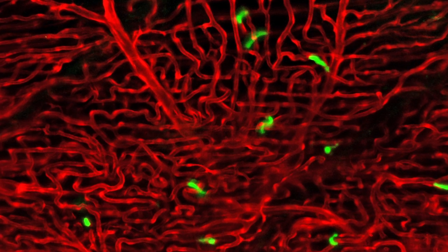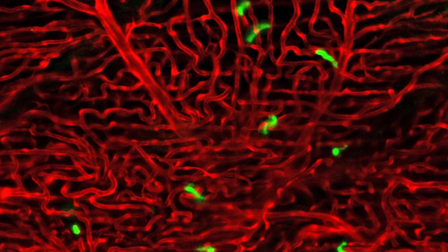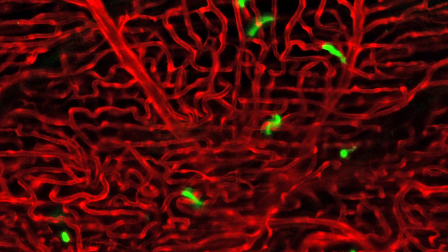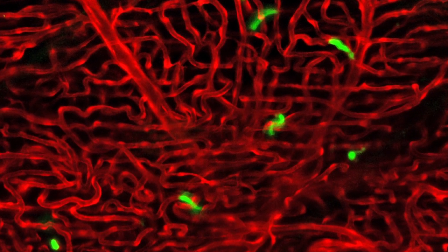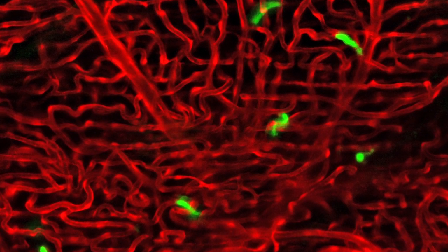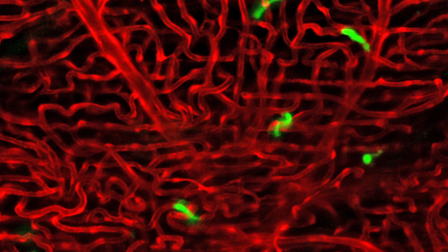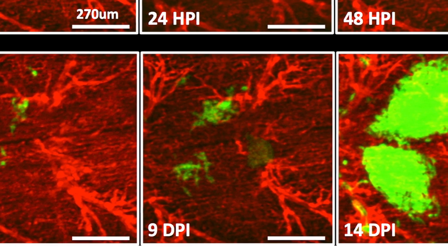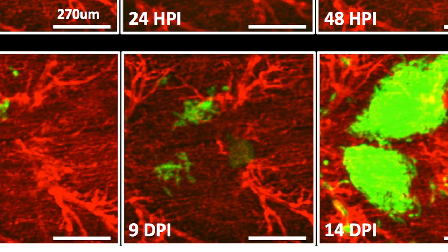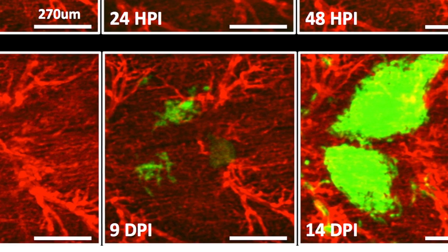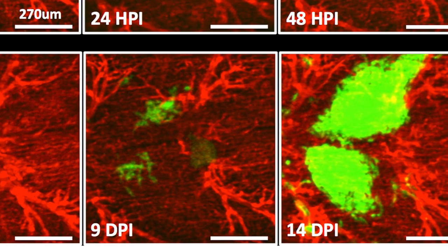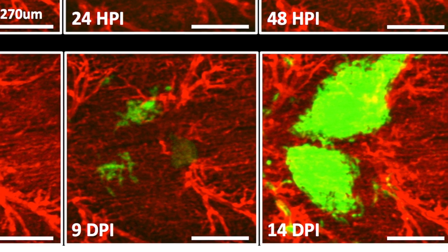This image is of green tumor cells trapped in red blood vessels, and this is actually in the tail of a transparent zebrafish. And so, these tumor cells, over the course of time, will actually leave the blood vessels and begin to form metastasis.